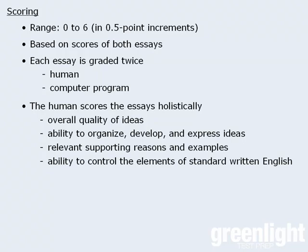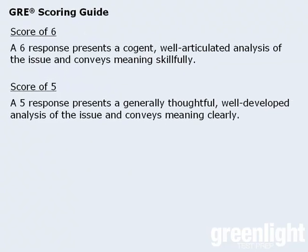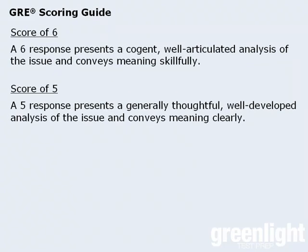To see how this holistic scoring works, let's examine part of the GRE scoring guide for the issue essay. An essay worthy of a 6 is one that presents a cogent, well-articulated analysis of the issue, and an essay worthy of a 5 is one that presents a generally thoughtful, well-developed analysis of the issue. As you can see, the reader develops an overall impression of the quality of each essay, and then assigns a score.